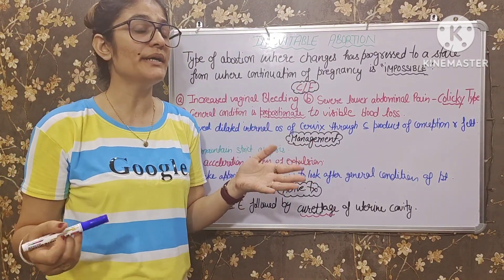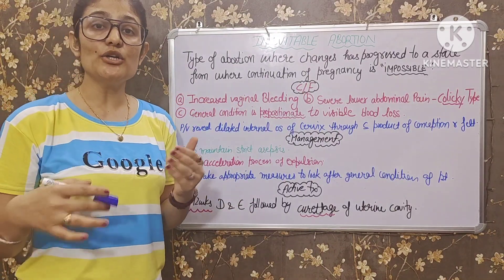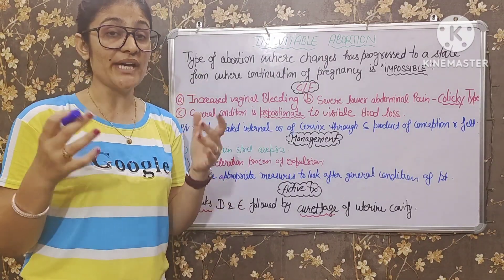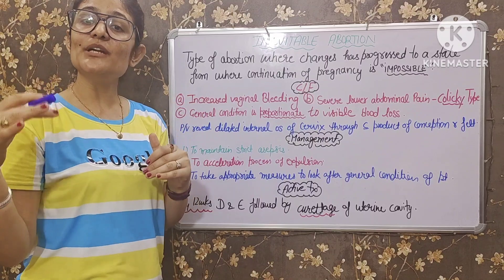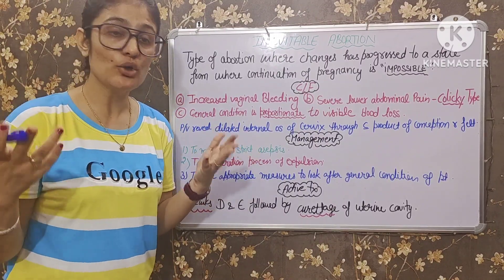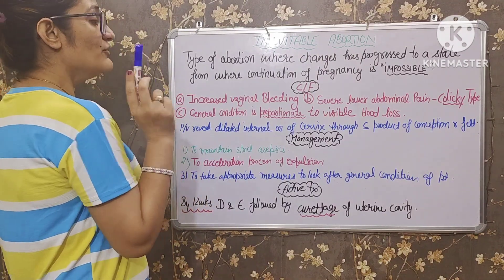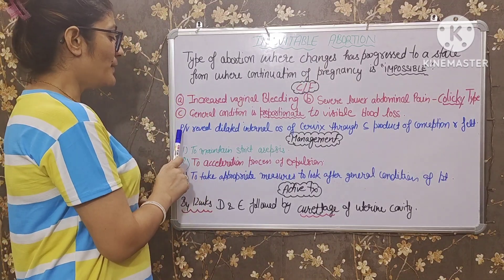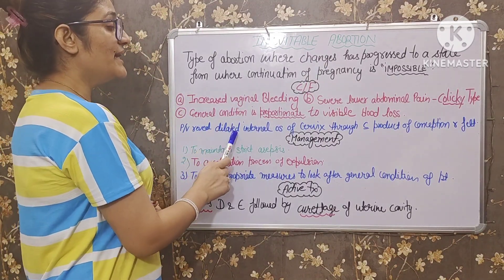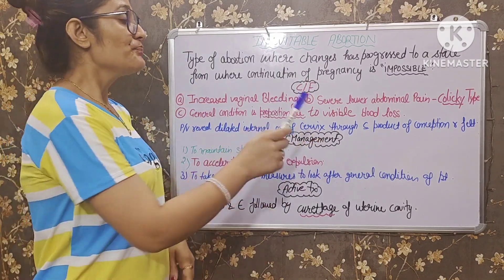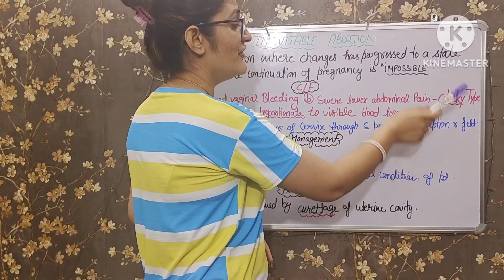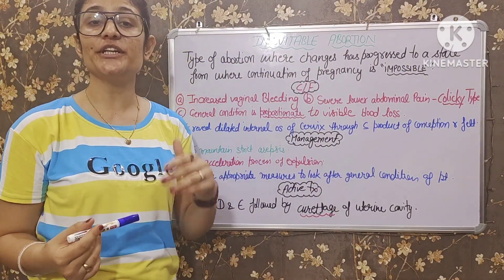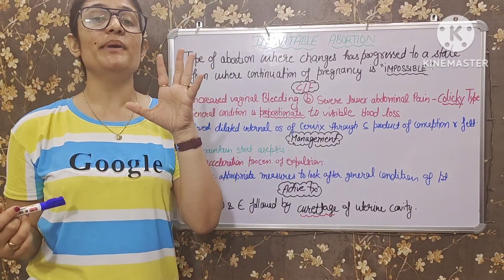Third clinical feature: general condition is proportionate to visible blood loss. Jitna zyada usko blood loss ho raha hai, uske according uski general condition bhi ho jayegi. Agar zyada blood loss hota raha to that will lead to weakness — patient bahut zyada weak ho jayega, shock mein ja sakta hai. Per vaginal examination reveal: dilated internal os of cervix, through which products of conception are felt.